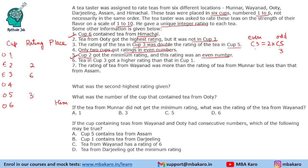Now we have to assign 3 more numbers and these are all odd. 3 is already assigned, minimum is 2 so we cannot give 1. So the remaining ratings are 5, 7, and 9. It also says that the tea in cup 3 got a higher rating than that in cup 1, so C3 > C1. The only possible number for cup 1 is 5.